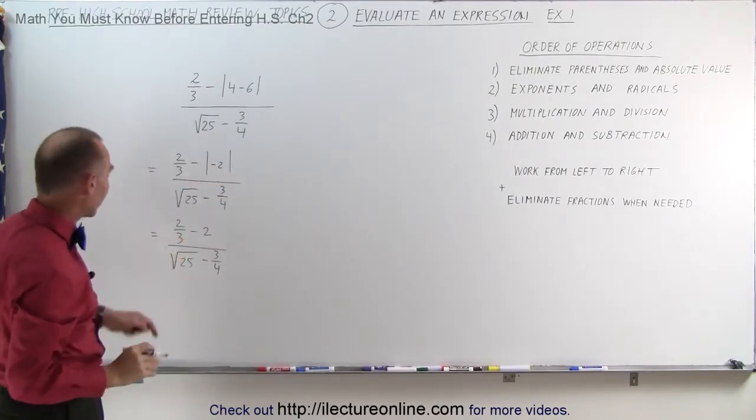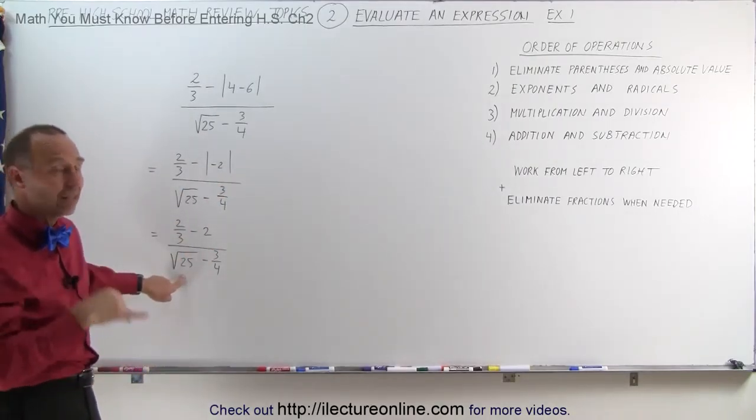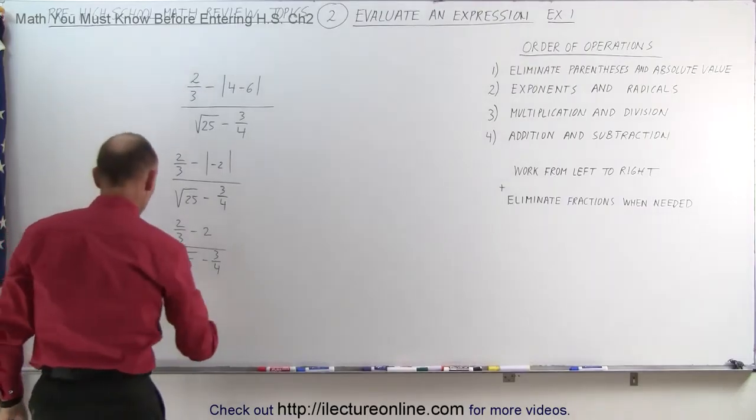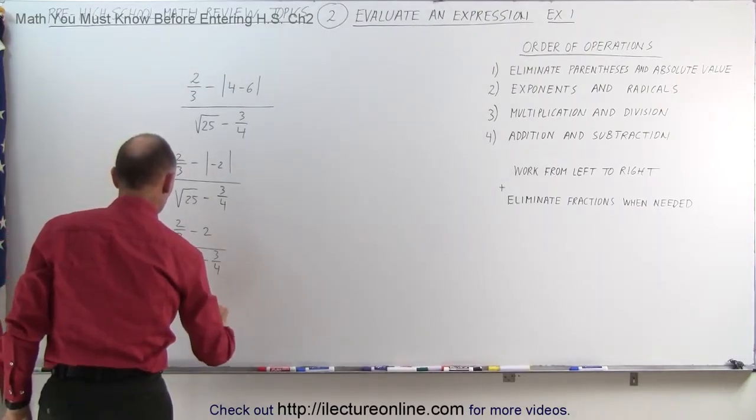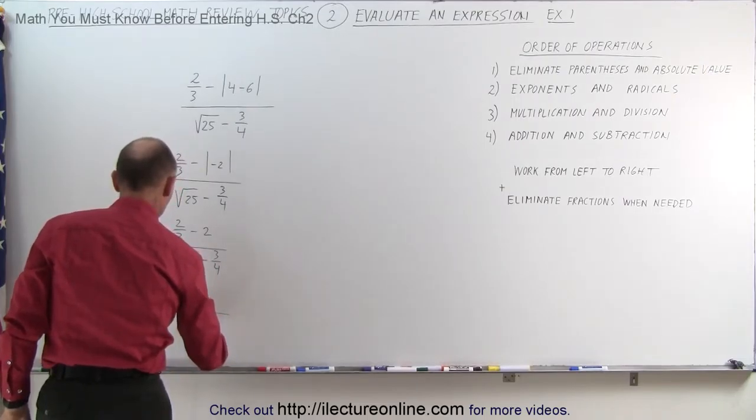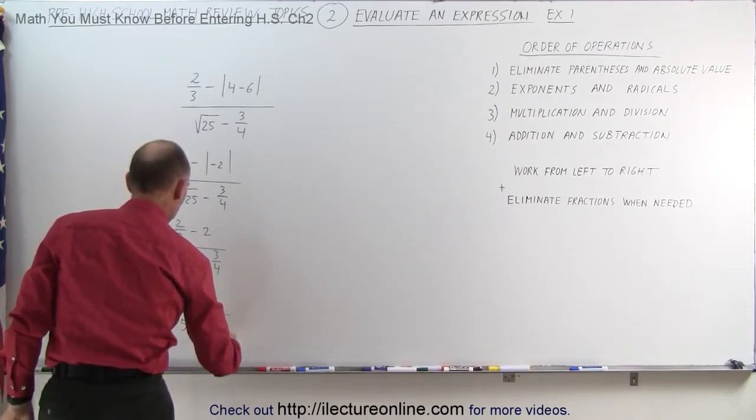Next we should get rid of exponents and radicals. We have a radical here, so let's take the square root of 25, which is equal to 5. This becomes equal to 2/3 minus 2 divided by 5 minus 3/4.